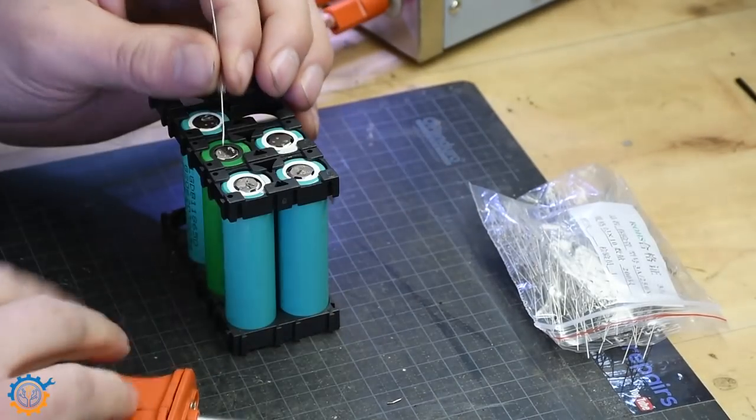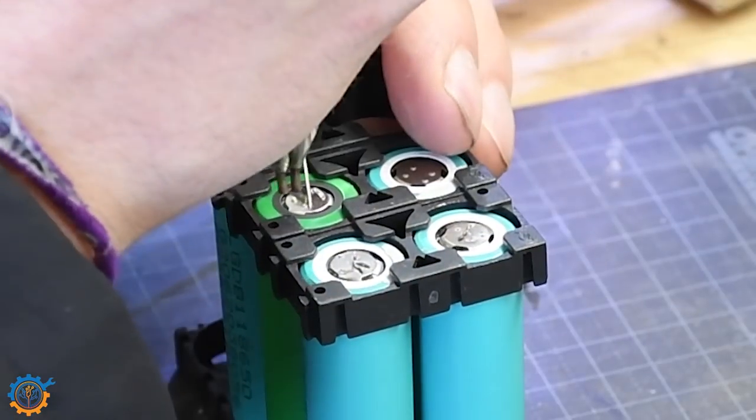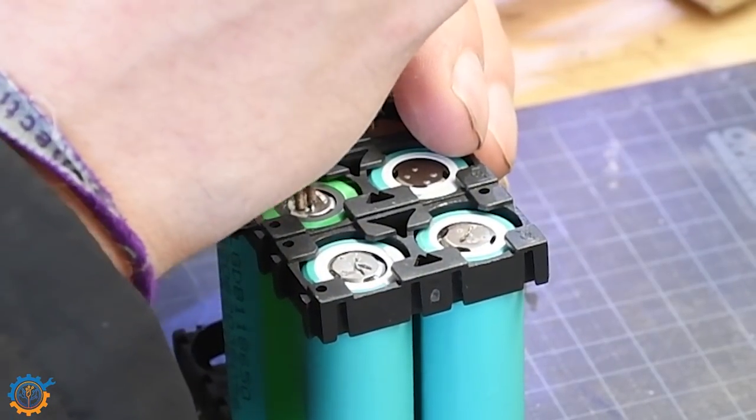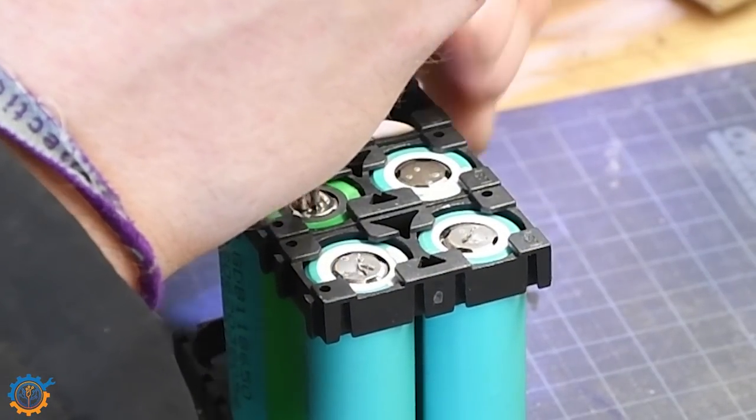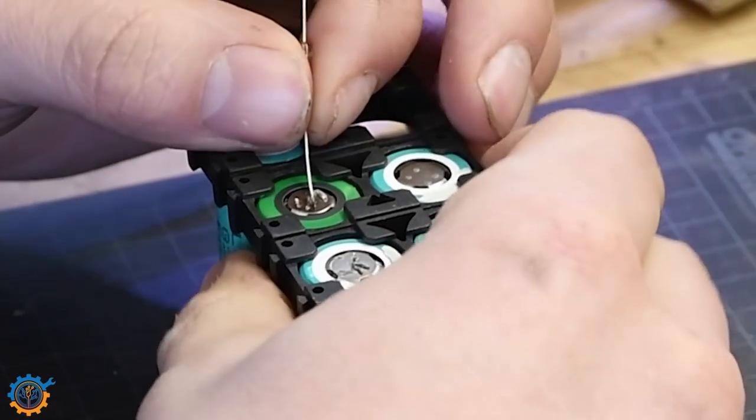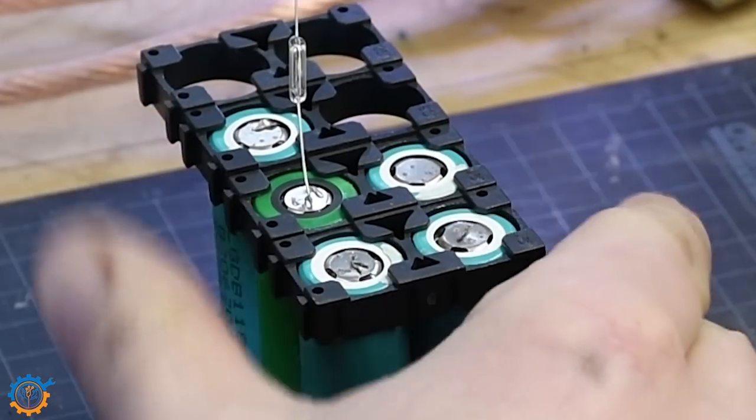Let's do this again on another cell to make sure this wasn't a fluke. Firm pressure and we weld it. And still it sticks like crazy.